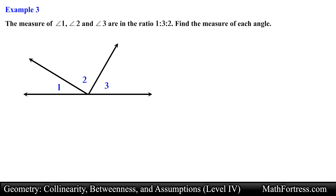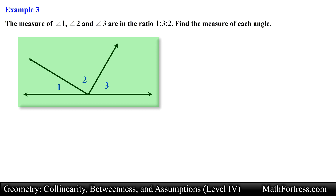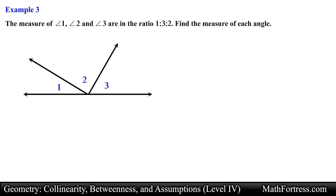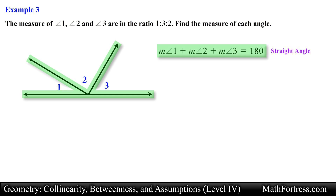The measure of angle 1, angle 2, and angle 3 are in the ratio 1 to 3 to 2. Find the measure of each angle. Similar to the previous problem, we are provided with a diagram with various angles and are given the ratio of the measurements between all 3 angles. Let's first determine the geometric relation. Notice that angle 1, angle 2, and angle 3 form a straight angle. So we can set up the following geometric relation: the measure of angle 1 plus the measure of angle 2 plus the measure of angle 3 is equal to 180 degrees.